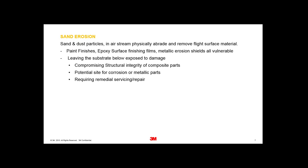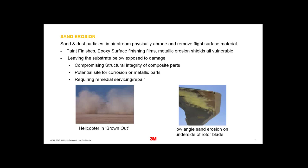Once erosion has started and you've taken away your immediate layer of protection — whether paint or an erosion shield — you're leaving the substrate below, either composite or metal, open and exposed to the elements. This could start to compromise the integrity of a composite part, and there's a potential site for metallic corrosion — all of which require remedial servicing before re-entering service.